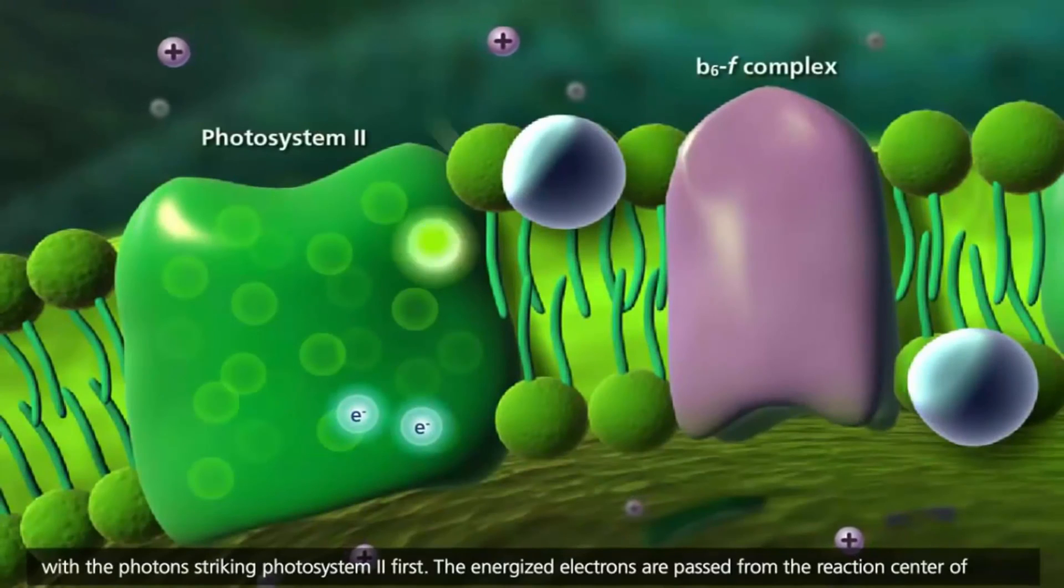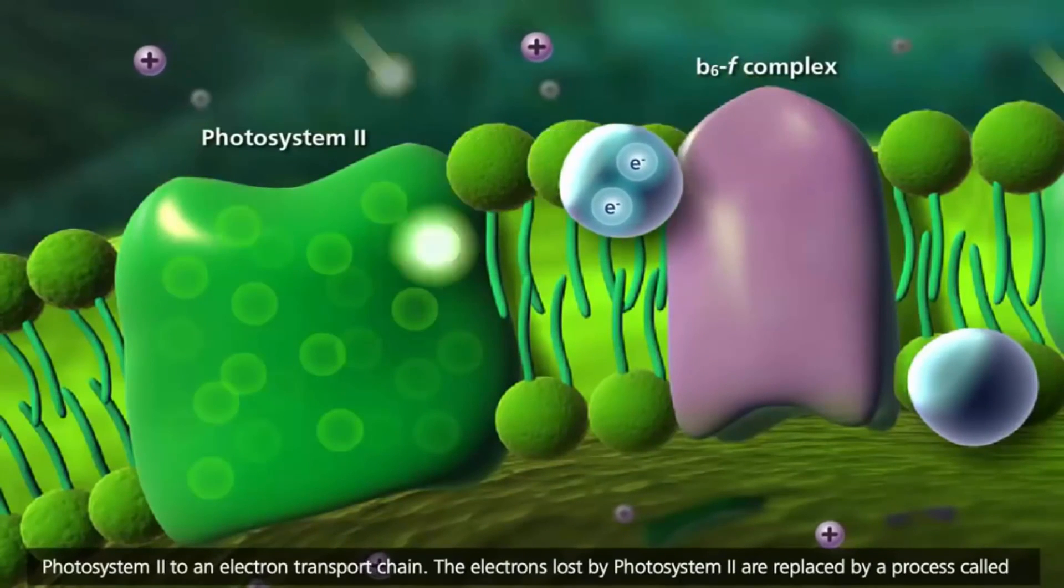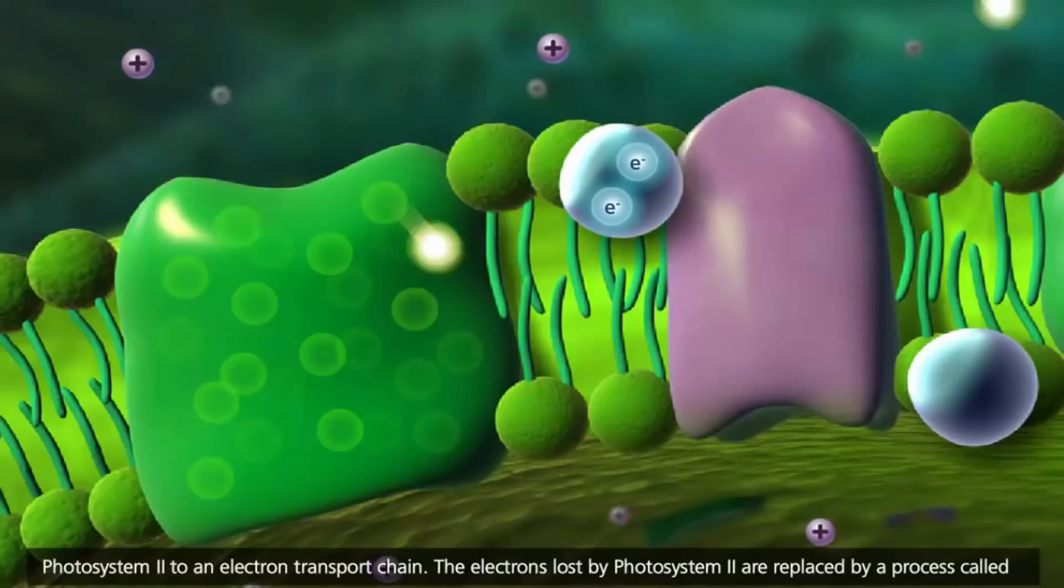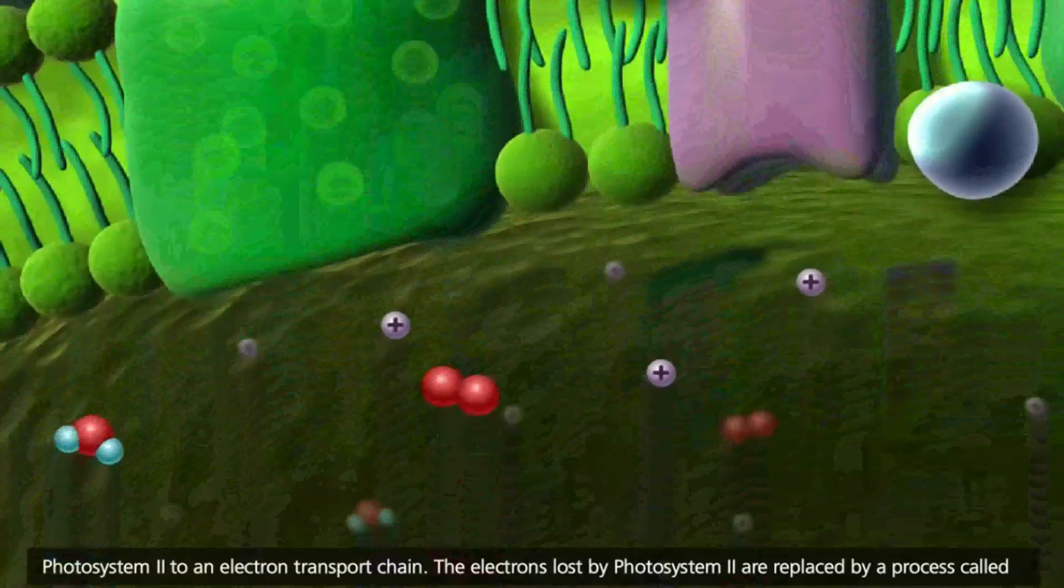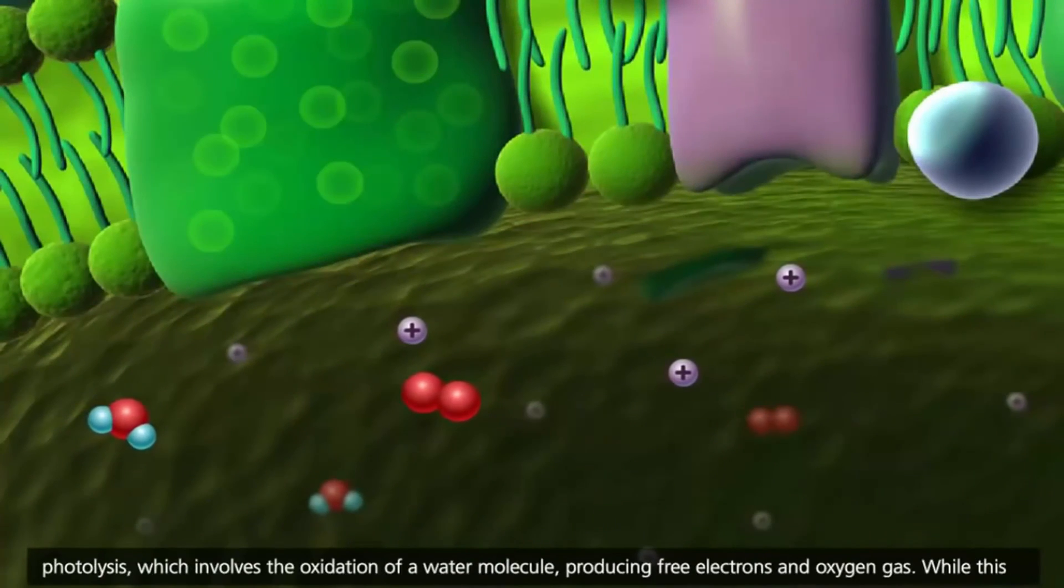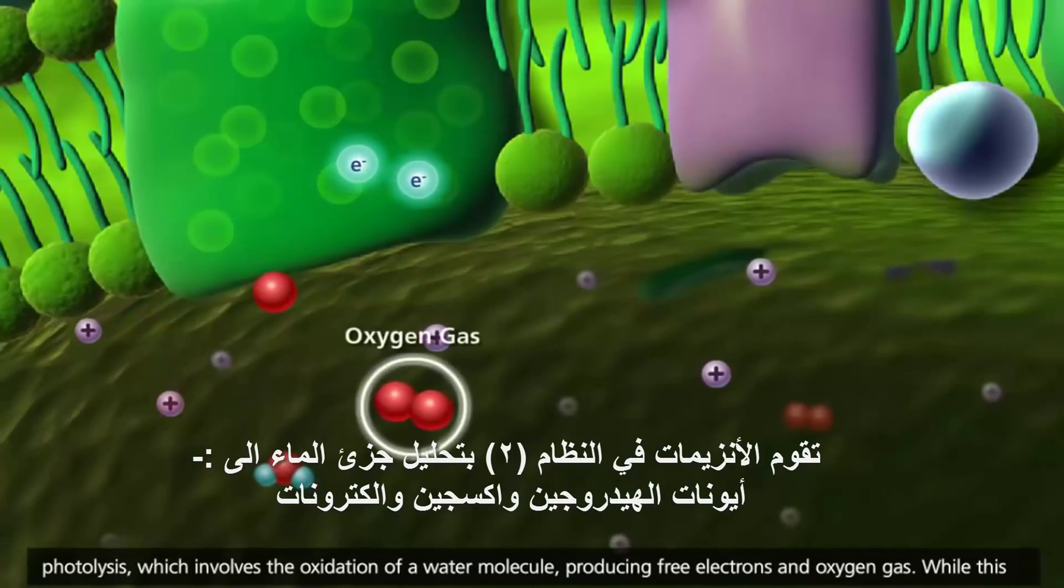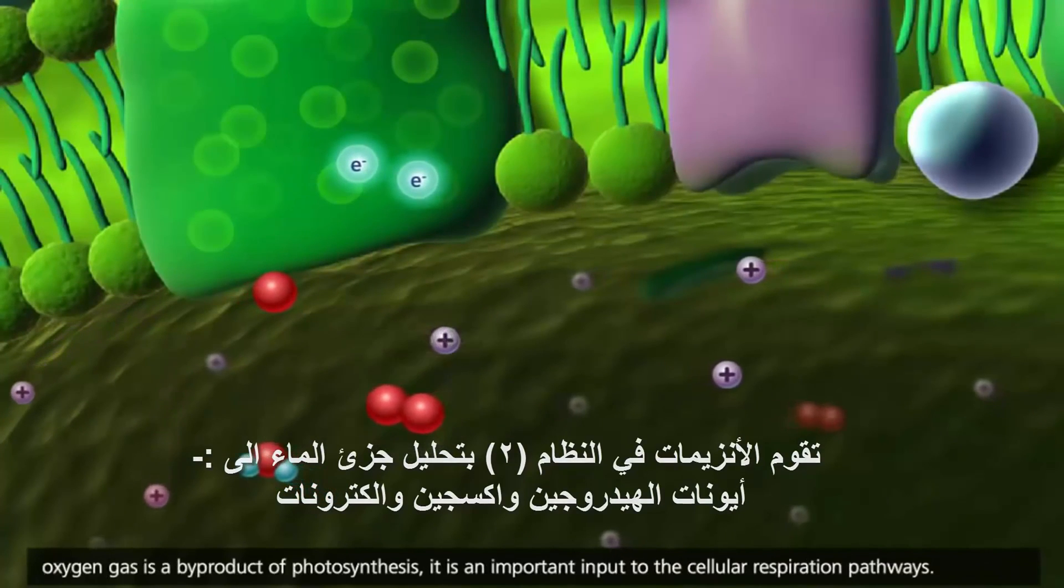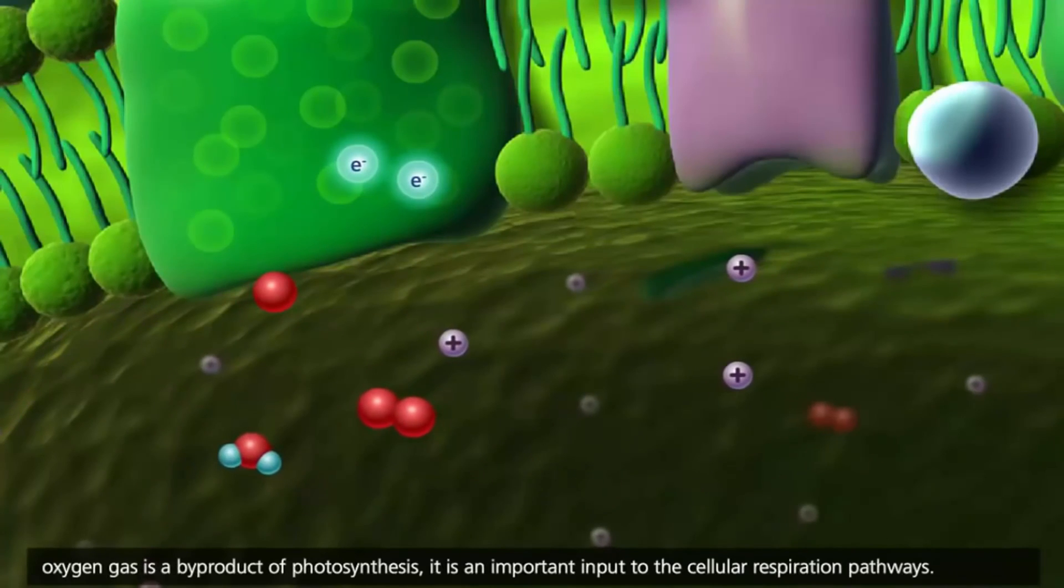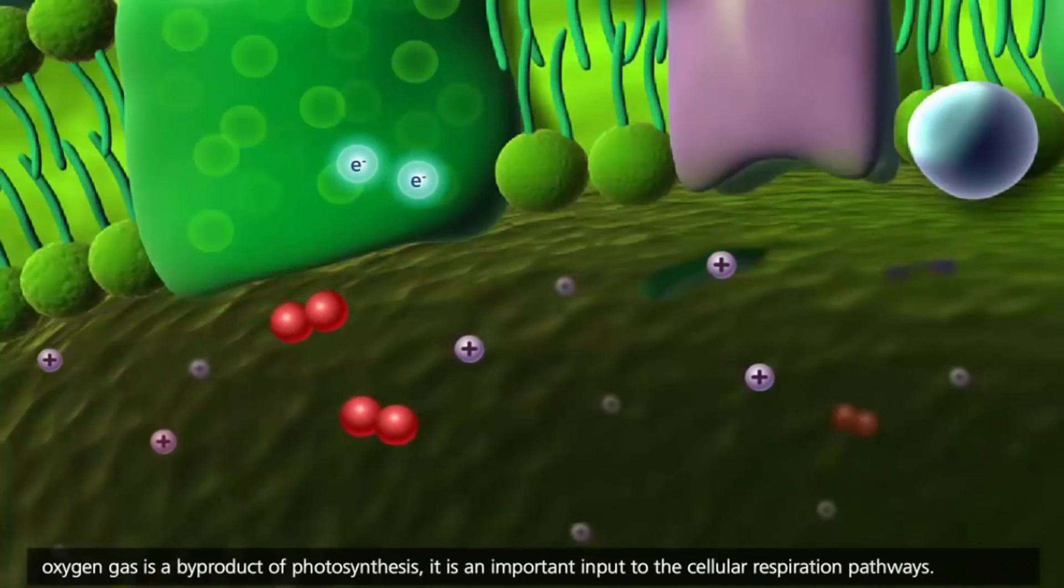The energized electrons are passed from the reaction-center of photosystem II to an electron-transport chain. The electrons lost by photosystem II are replaced by a process called photolysis, which involves the oxidation of a water molecule producing free electrons and oxygen gas. While this oxygen gas is a by-product of photosynthesis, it is an important input to the cellular respiration pathways.